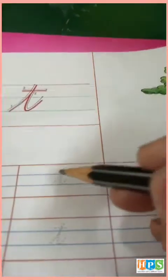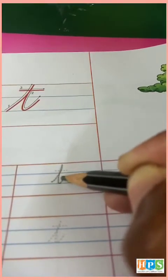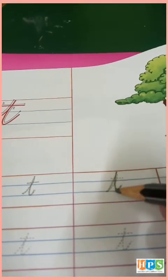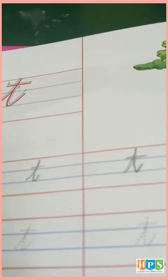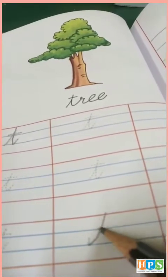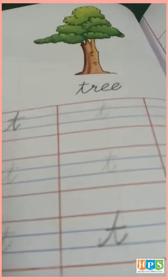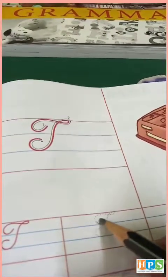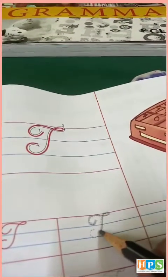T. Small t. Just straight up, down, up. Capital. I made a round, low curve, swing. This is T.